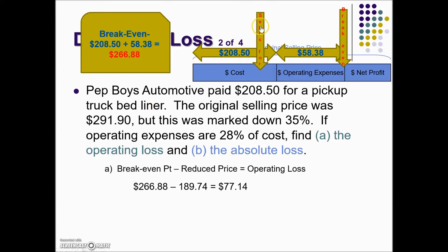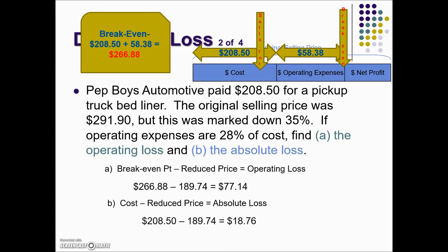Since the sale price is under cost, we also have an absolute loss. To calculate the absolute loss, we take the cost minus the reduced selling price: $208.50 minus the sales price gives us an absolute loss of $18.76 for this problem.